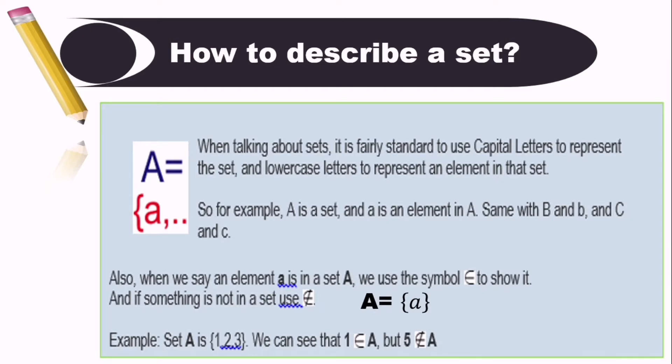Now, when we say an element a in a set A, we use the symbol ∈ to show it. And if something is not in a set A, we use ∉. For example, set A has elements 1, 2, and 3. We can see that 1 is an element of A, but 5 is not an element of A.